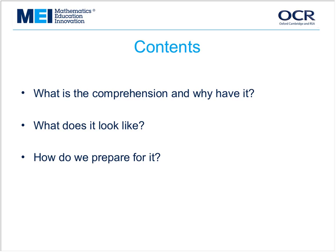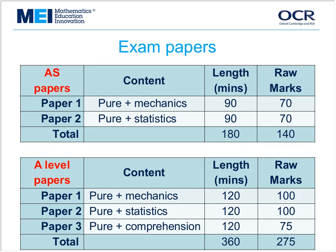So here are my three headings for what I'm going to talk about today. What is the comprehension and why have it is our first one, so let's get into that straight away. That's what the exam papers look like for the MEI spec. The AS papers are a couple of 90-minute papers. And the A-level papers are three two-hour-long papers. The feature we notice looking at the table is that Paper 3 in the A-level is only 75 marks and it has the comprehension section.